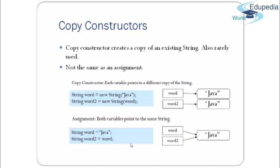The copy constructor creates a copy of an existing string and is also rarely used. It is not the same as assignment. With the copy constructor, each variable points to a different copy of the string. So if word = "Java" and word2 = new String(word), there will be two "Java" objects in memory. With simple assignment, only one "Java" is created and both variables point to the same object.